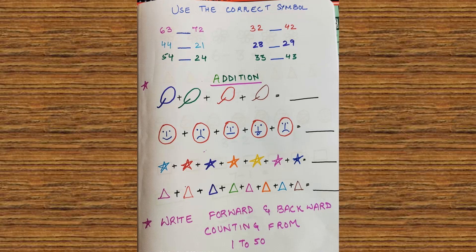This is my first worksheet. In this, the kids have to use the correct symbol of greater than and smaller than. For example, this is 63, this is 72. So what will this be? 72 is greater than 63, that means 63 is smaller than 72.